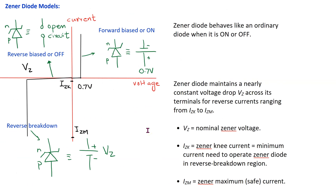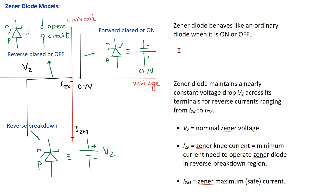Recall that a Zener diode is a special type of diode designed to operate in the reverse breakdown region. When a Zener diode is forward biased (on) or reverse biased (off), the Zener diode behaves like an ordinary diode.